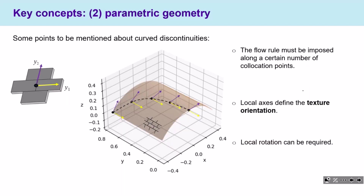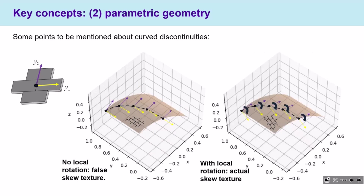For curved discontinuities and curved yield lines, we need to define collocation points to ensure the flow rule is satisfied along the whole yield line. The local axis defined along each collocation point automatically identifies the texture orientation — for example, the yellow axis corresponds to the direction of bed joints. For square arches there are no problems, but for skew arches we must apply a rotation to the local axis to avoid obtaining a wrong texture and to correctly represent failures within the homogenized material.